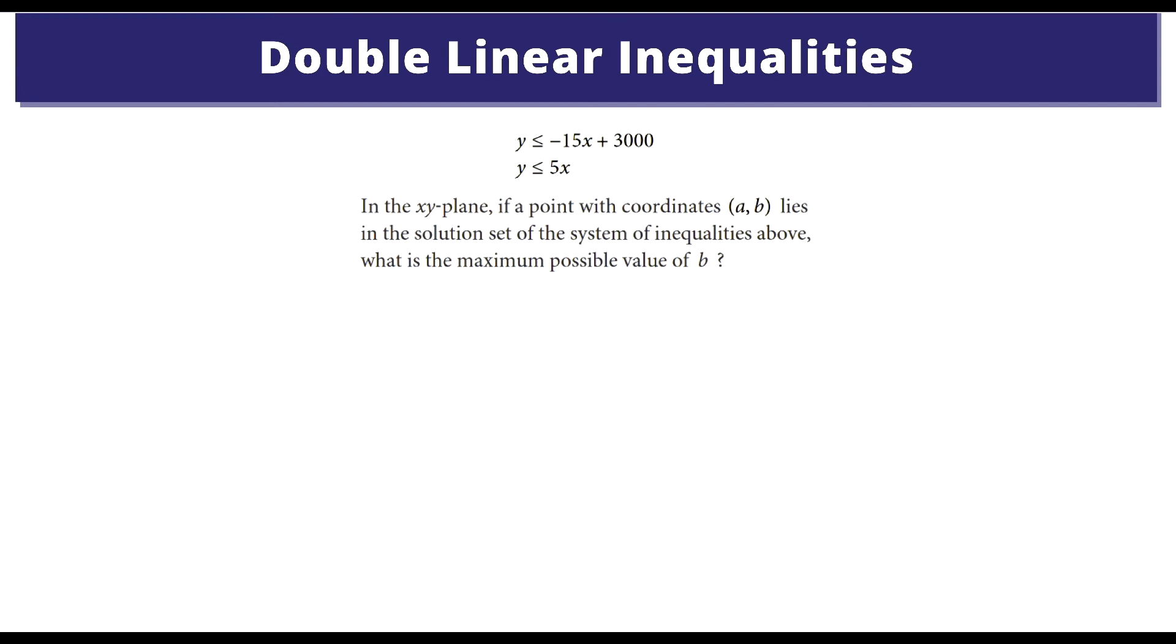On to the next one. In the xy-plane, if a point with coordinate A, B lies in the solution set of this system of inequalities above, what is the maximum possible value for B? Because these are equal to one another, we could just do this: negative 15x plus 3000 equals 5x. We're trying to find the point of intersection. Let's add 15x to both sides. We get 20x equals 3000, and that equals 150, equal to x.